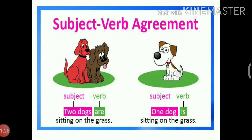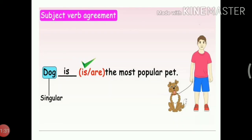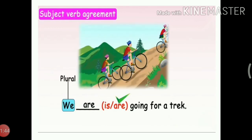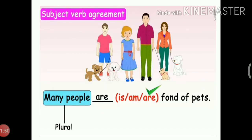Let us see some more examples. Dog is the most popular pet. The action of a dog is most pleasing for its master. We are going for a trek. Many people are fond of pets.